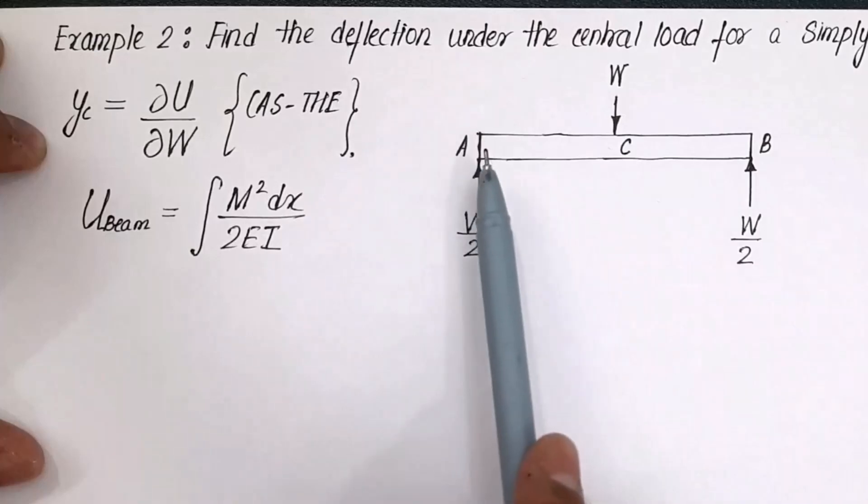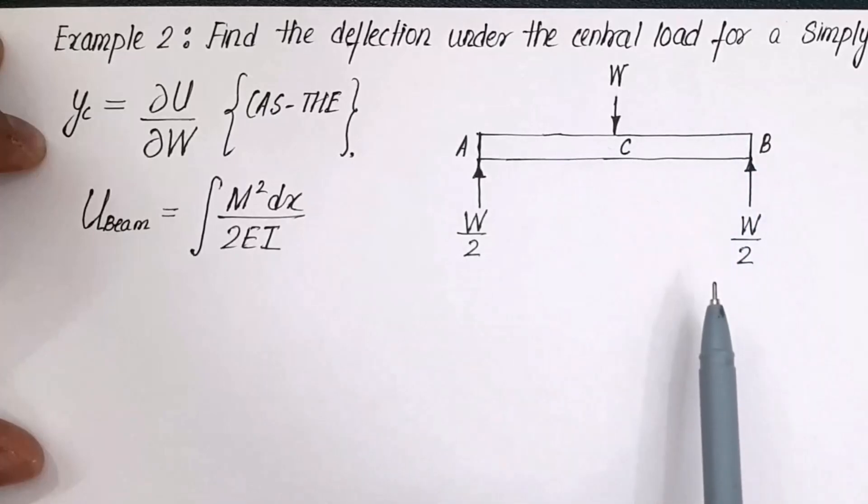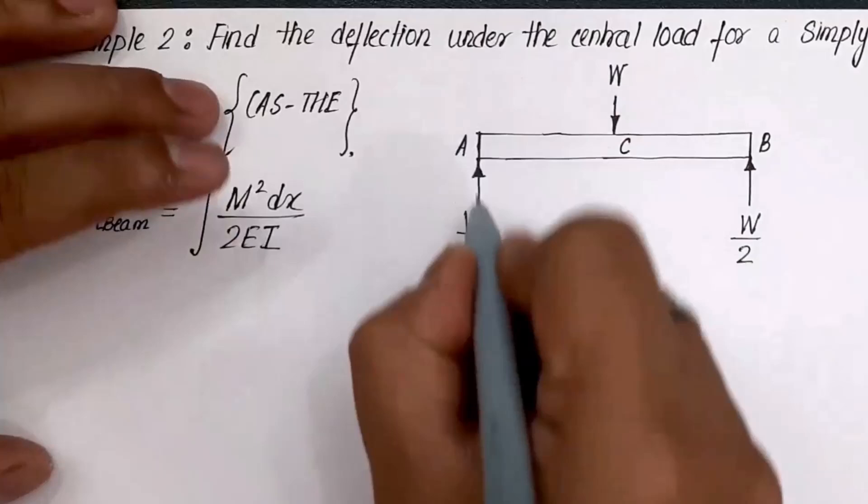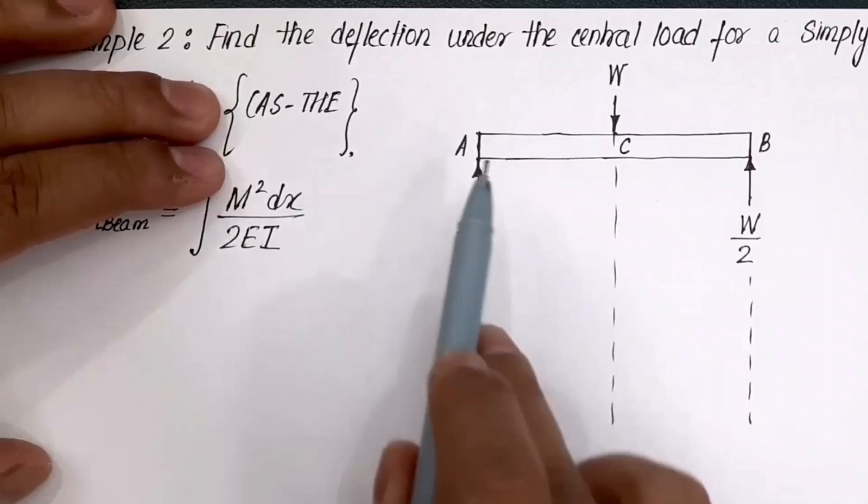Now what we'll do is we are going to consider portion AC, then find the corresponding strain energy, then we'll consider portion CB and then again repeat the same. Here we go. Let me make this. Let's say first we are considering this portion AC.